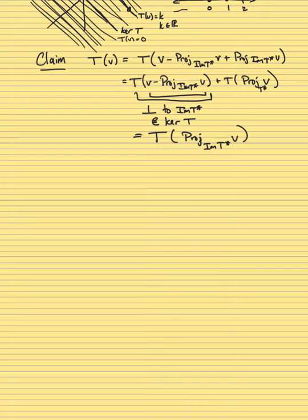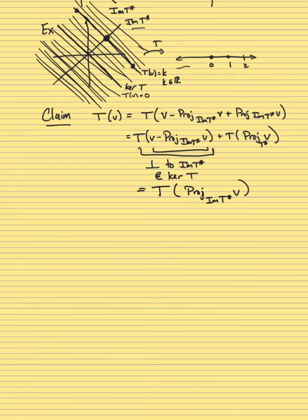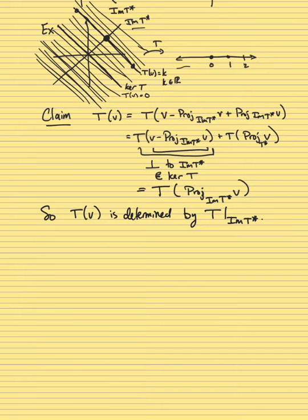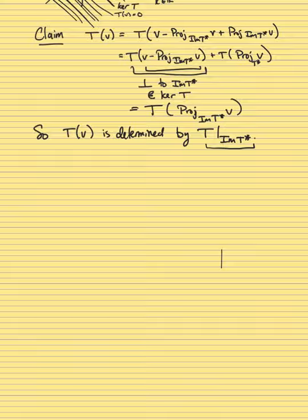That's the proof — quite easy once you have the right language, but also very powerful. What this means is that T of v is determined by T restricted to Im(T*). Everything else you obtain just by orthogonally projecting onto that subspace and then applying T. And there's certainly no kernel of this restricted linear transformation, so in some sense you can deal with only vector space isomorphisms without losing too much information. Let me move on now to specific linear transformations with nice geometric importance.